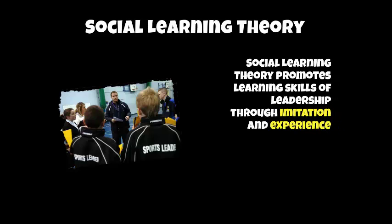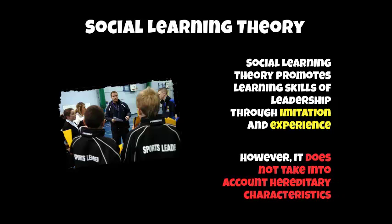Social Learning Theory promotes the learning of leadership skills through imitation and experience. For example, young sports leader students may copy certain aspects of what the teacher or leader of the group is doing — that's imitation. The other aspect it encourages is experience: as a leader gains experience they might fail in a situation, such as losing control of a group of children in a sporting activity. But they would have learned from that situation and could put a strategy in place to become a better leader. The problem with Social Learning Theory, of course, is that it doesn't take into account naturally gifted leaders through hereditary characteristics.